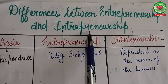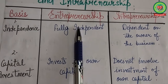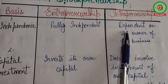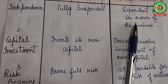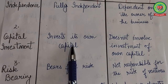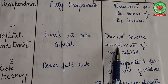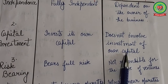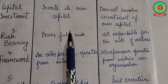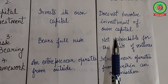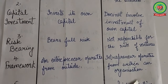Now the differences between entrepreneurship and intrapreneurship. First, independence — entrepreneurship is a fully independent enterprise; on the other hand, intrapreneurship is dependent on the owners of the business. Second, capital investment — entrepreneurship involves investment of own capital, but intrapreneurship does not involve investment of own capital. Third, risk bearing — entrepreneurship bears full risk of business failures, but intrapreneurship does not bear responsibility for the risk of business failure.